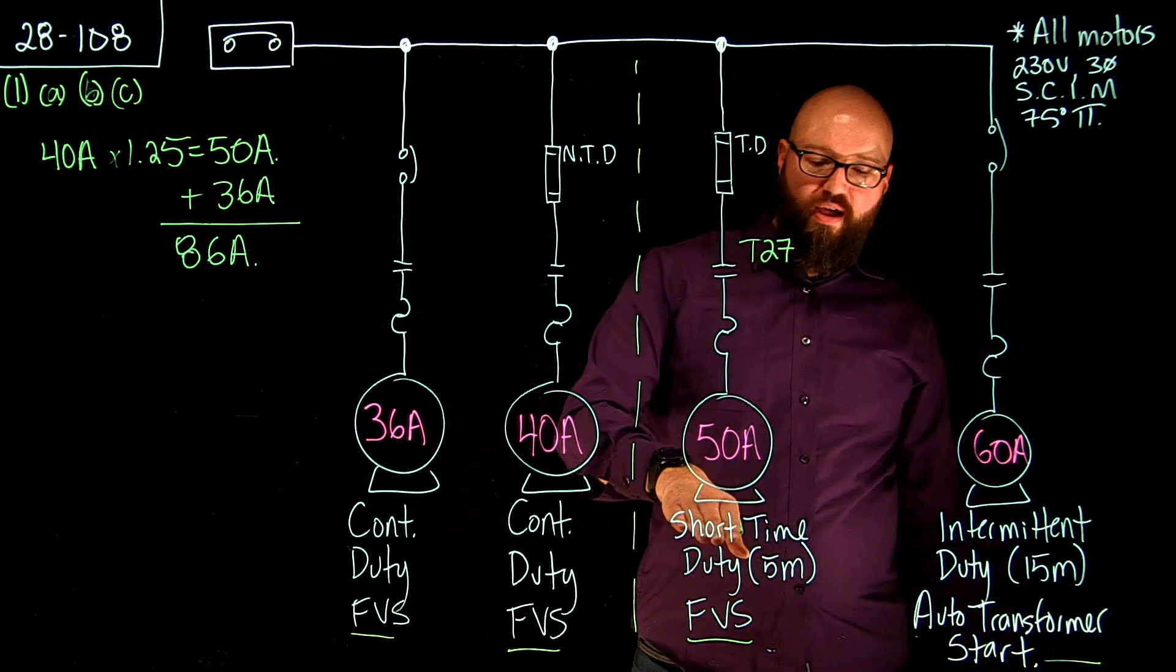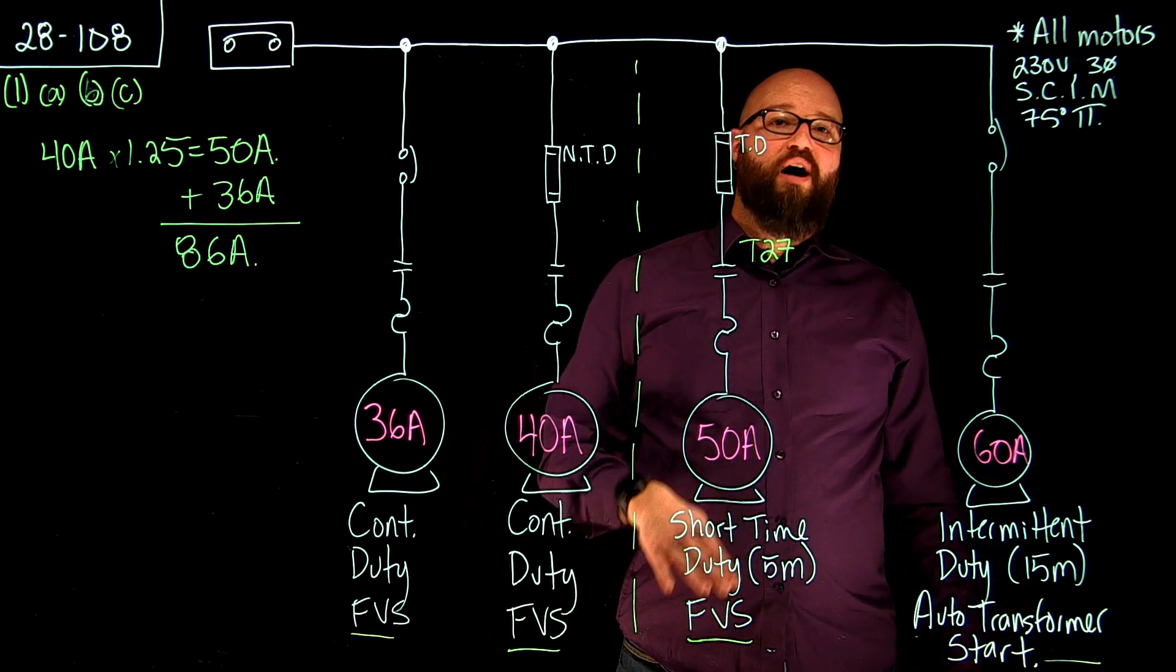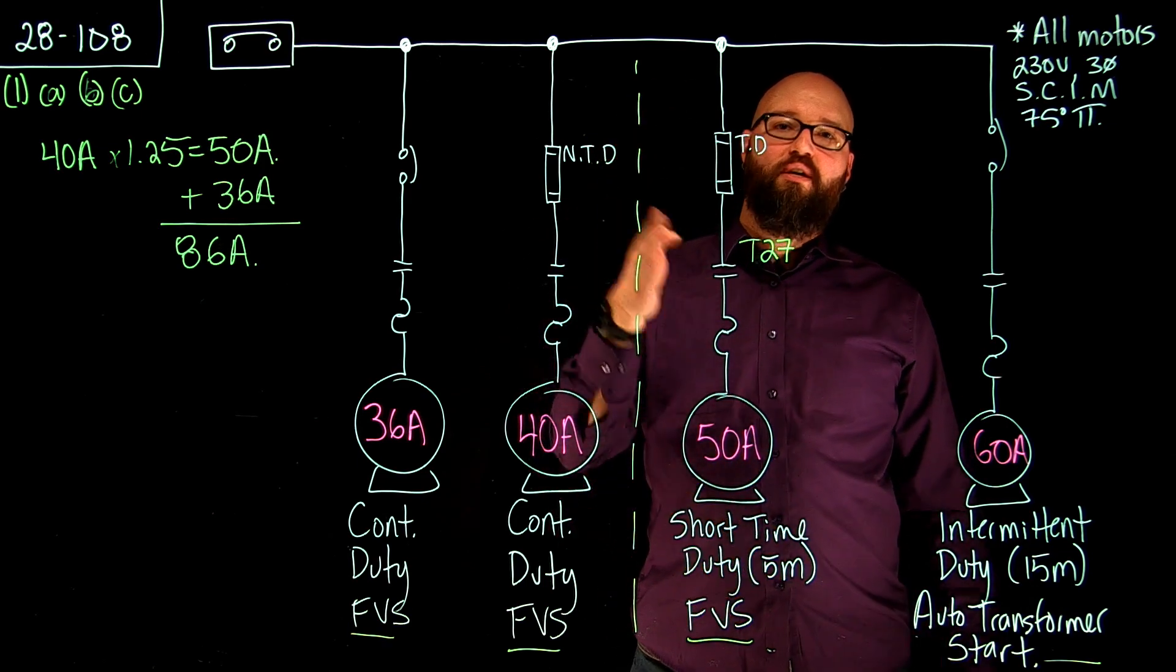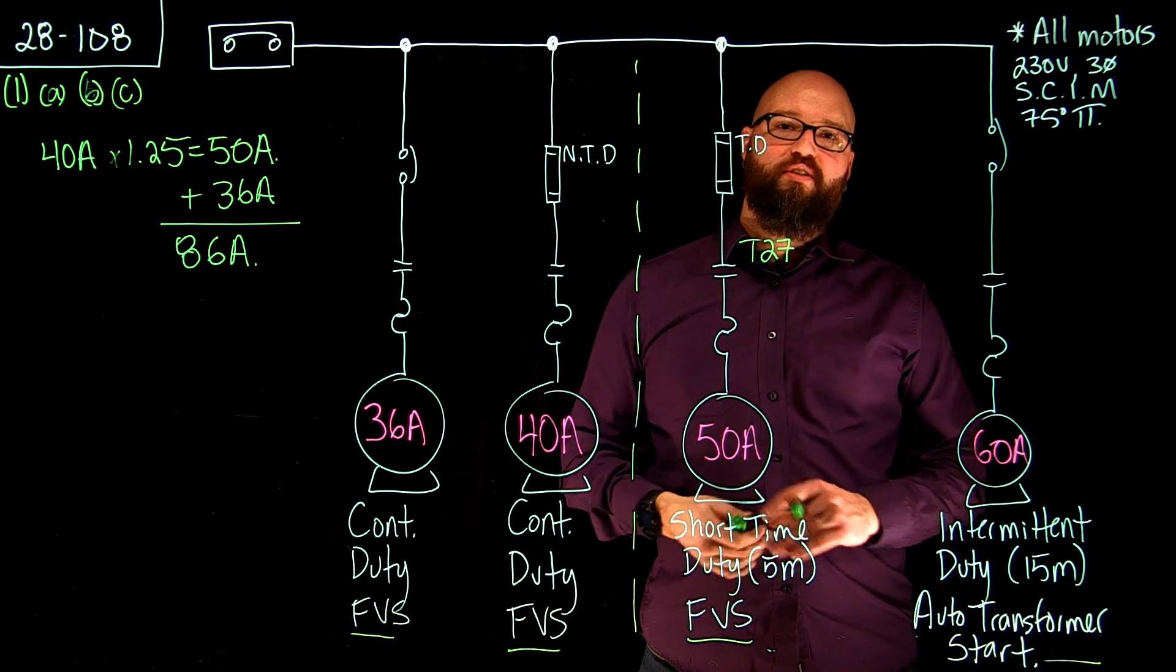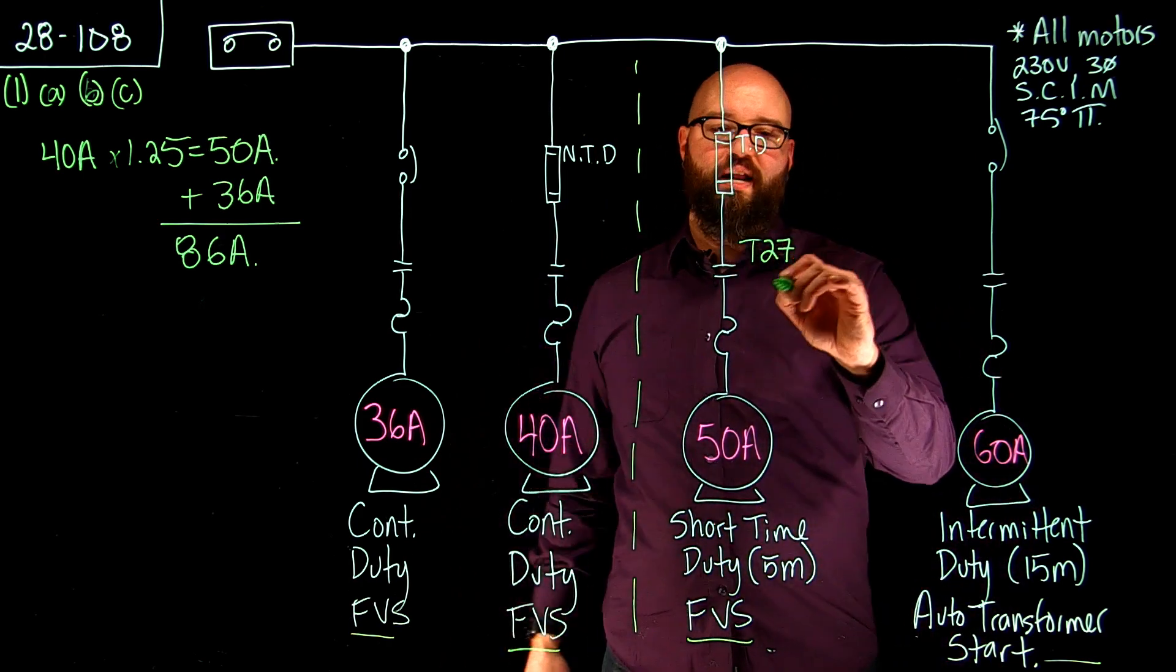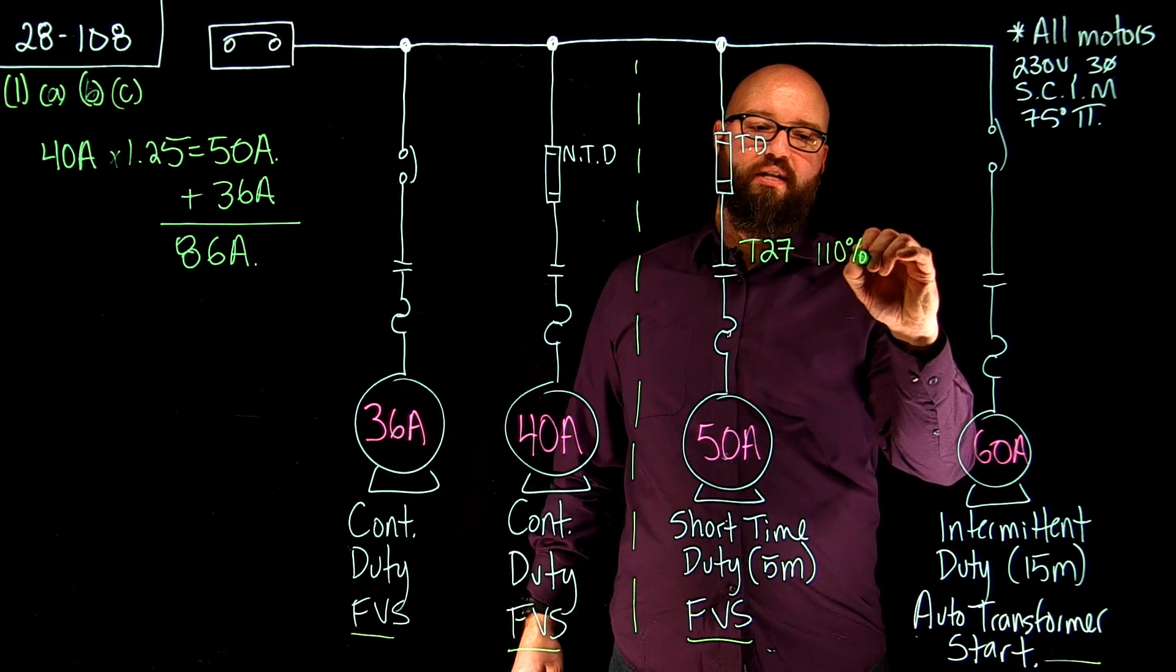So for example, if we have a short time duty of five minutes, we're going to go to Table 27. We're going to go down that column until we find short time duty. Then we're going to go over until we find the time rating. So for five minutes short time duty, we should see a rating of 110%.